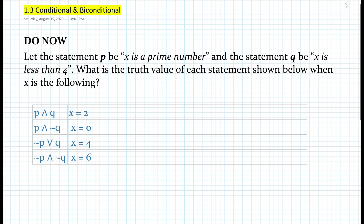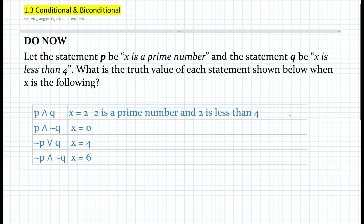Let's do the first statement. The first statement would be: two is a prime number and two is less than four. All we did is replace X with two. Is two a prime number? Yes, so it's true. And two is less than four, so that's also true. We learned in the last lesson that in a conjunction, when both conjuncts are true, the conjunction is true. So here we write true.